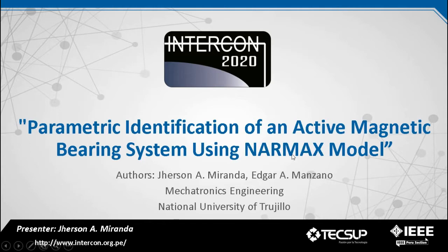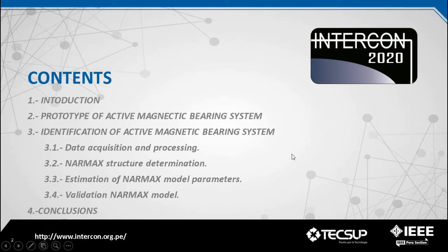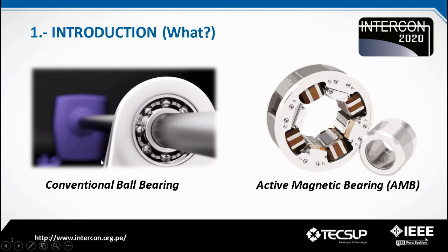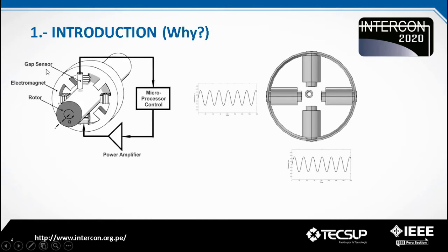This research presents an identification approach for nonlinear systems based on the NARMAX polynomial model and applied to the active magnetic bearing prototype. The active magnetic bearings are considered an important component of rotating machines, addressing problems such as rotor imbalance, overheating, and unbalanced high rotation speeds. The active magnetic bearings generate electromagnetic forces in the rotor using electromagnets to stabilize the rotor imbalance caused by high rotation speeds or when the rotor shaft is too long.